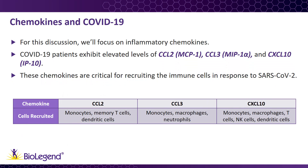Early observations of patients suffering from COVID-19 showed an increased expression of several key chemokines, including CCL2, CCL3, and CXCL10. Additionally, patients requiring ICU care presented with higher levels of each of these chemokines. These chemokines attract different classes of immune cells to the damaged lungs, as the body attempts to eliminate the virus and begin repairing the damaged tissue.